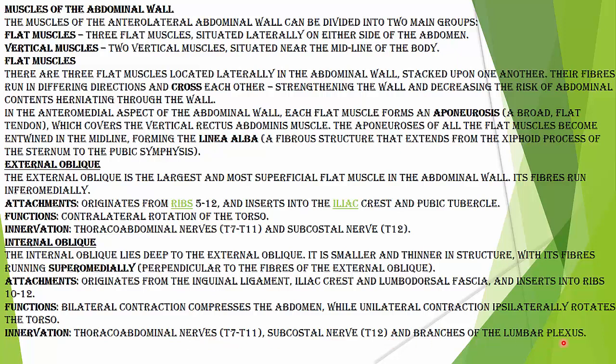External oblique flat muscle mein sabse largest muscle hai, jo ke 5th se 12th rib pe originate hoke iliac crest mein attach hota hai. Iska function contralateral rotation of torso hai, which means it rotates the torso to the opposite side. Innervation hai thoracolumbar nerves.